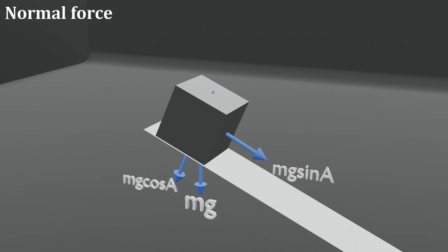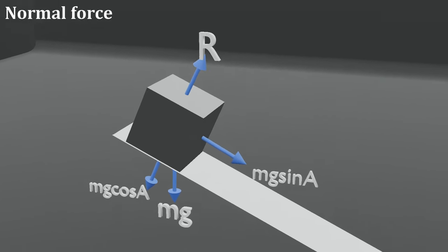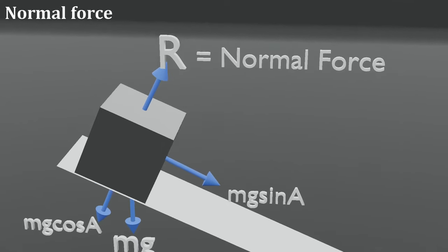Now, a force develops perpendicular to the surface of contact and opposite to mg cos alpha. This perpendicular force is the normal force.